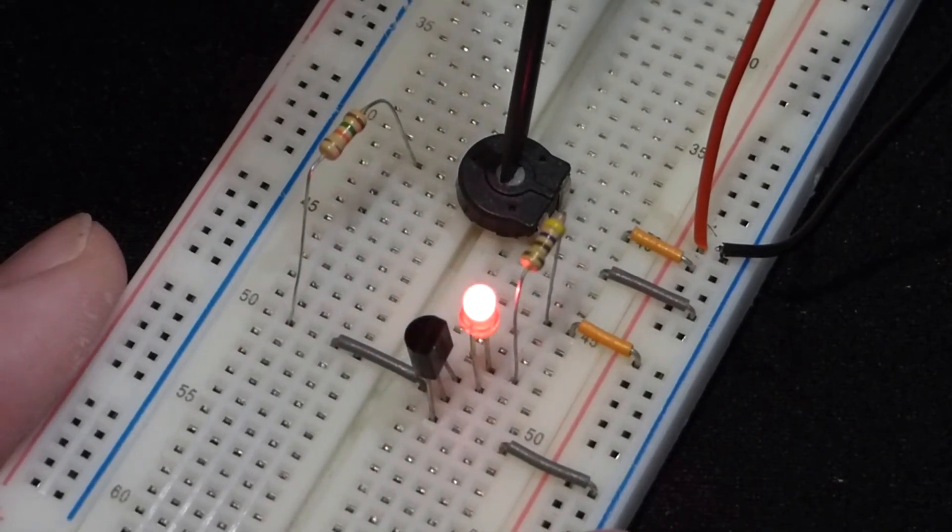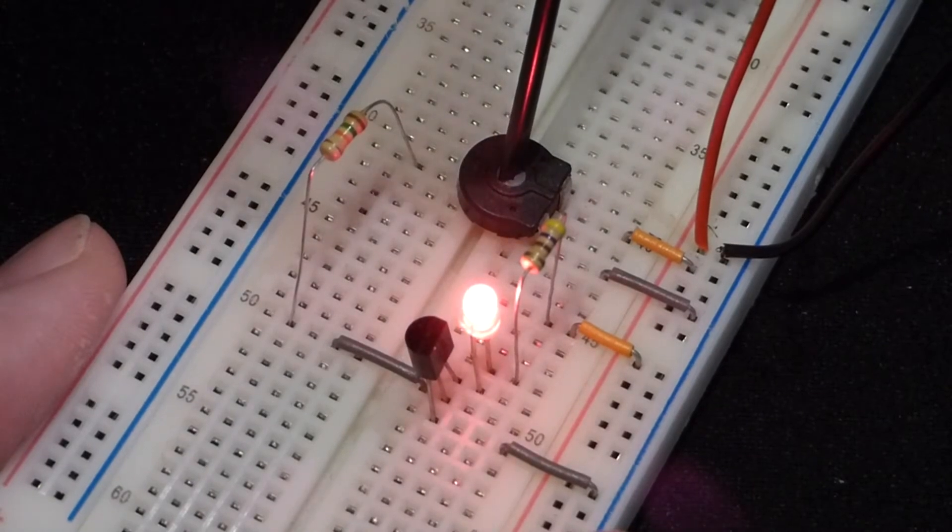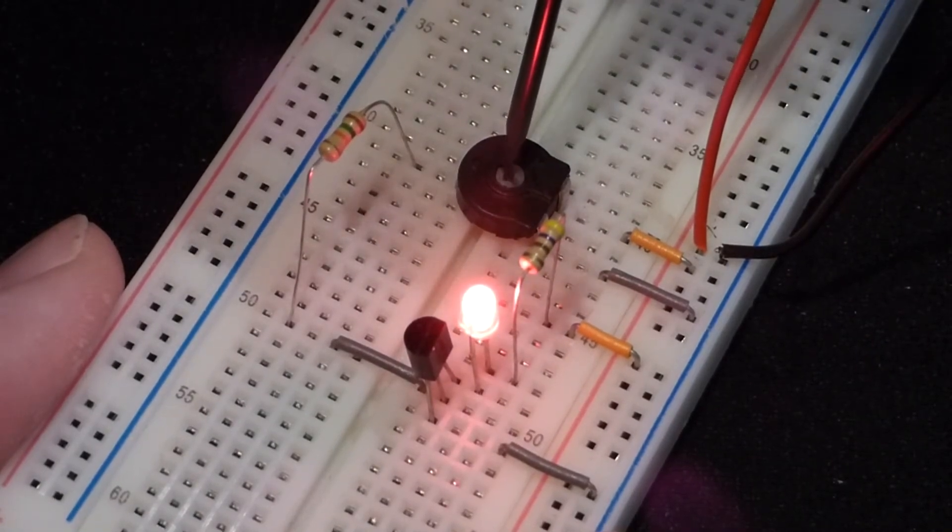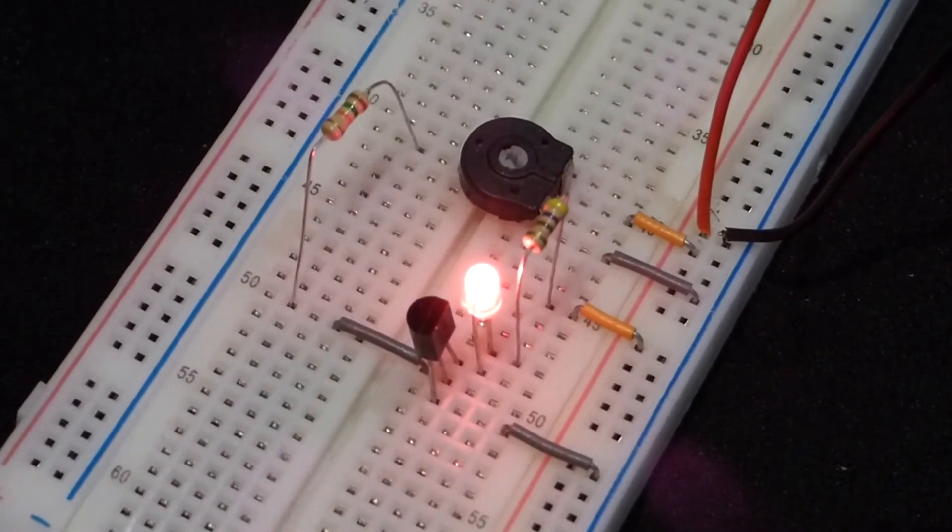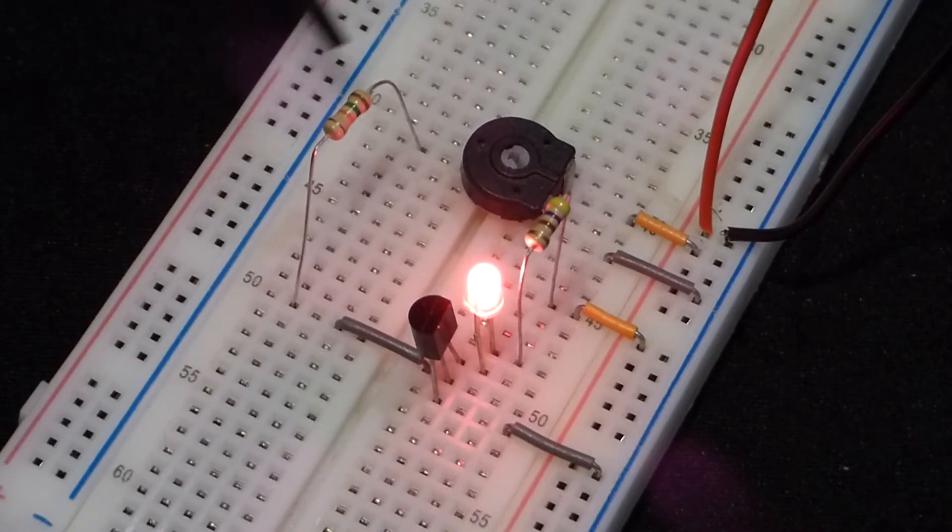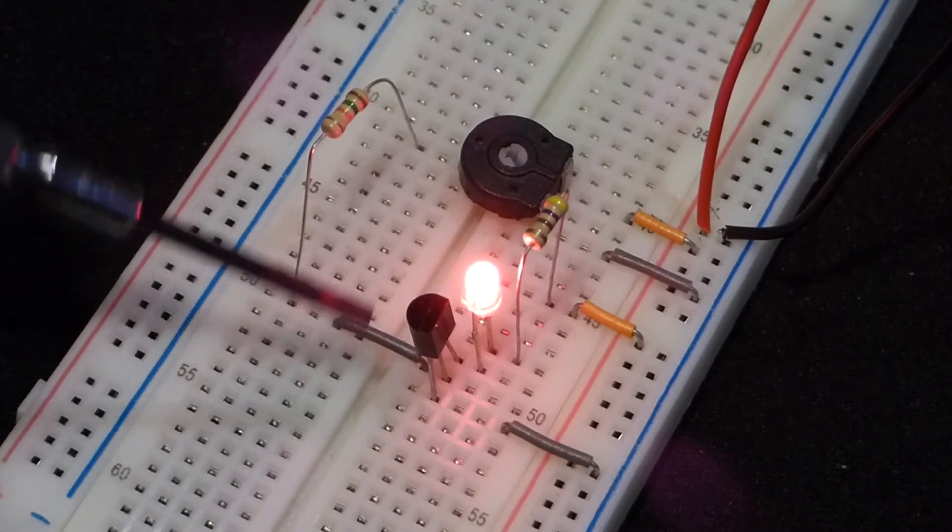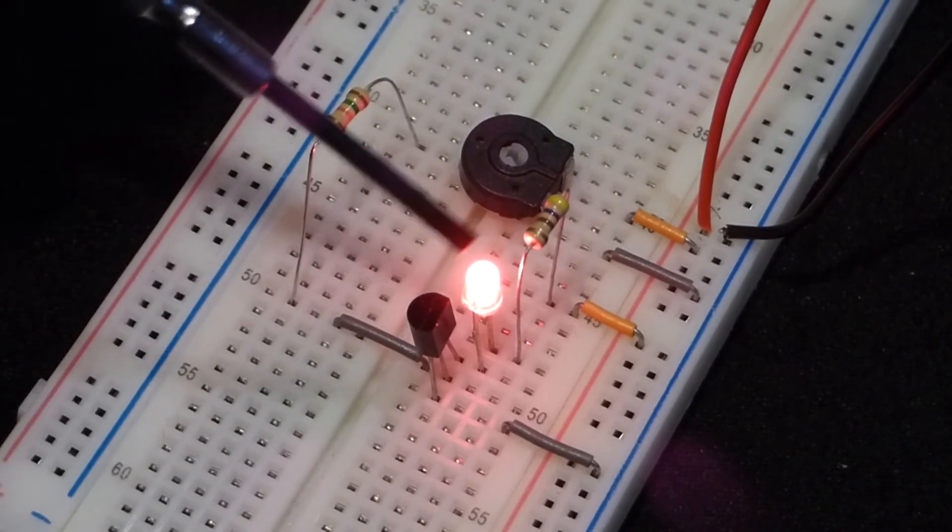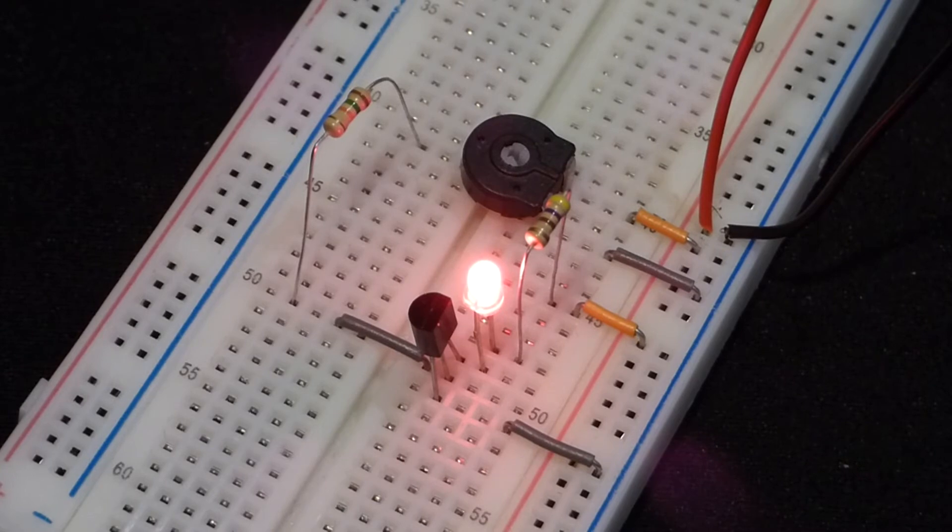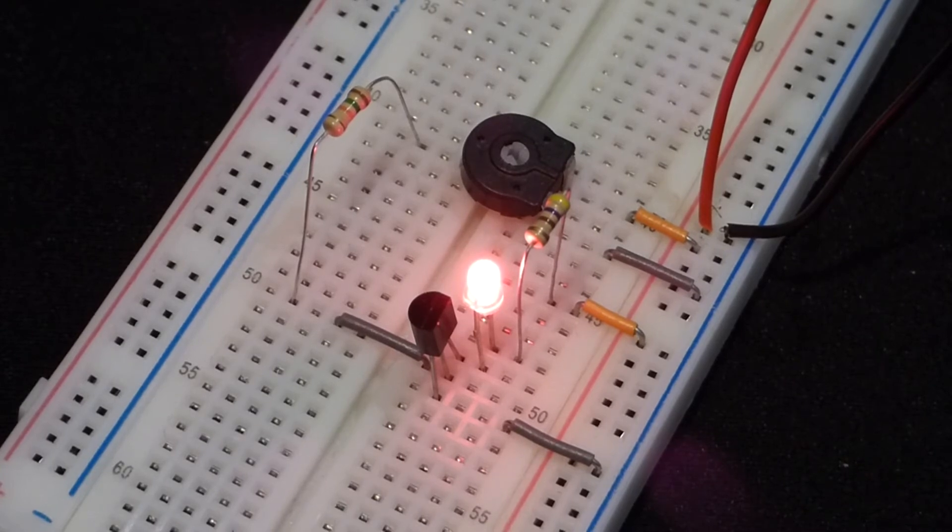This is called the active region. We have a little play there. And then at some point it gets about as bright as it can and we get to a point of saturation. No matter how much I raise the current to the base of the transistor the LED won't get any brighter. The transistor is letting as much current through as it can.